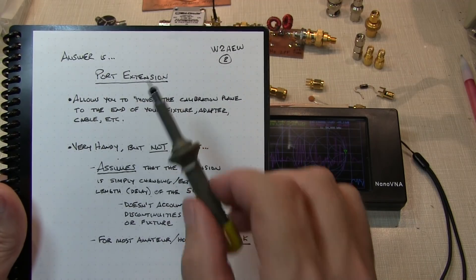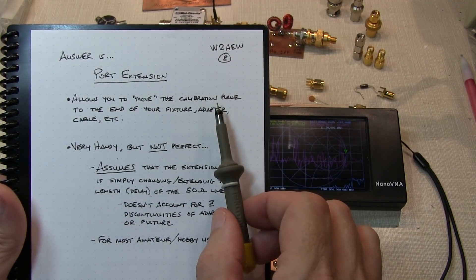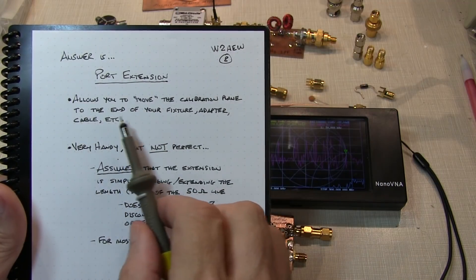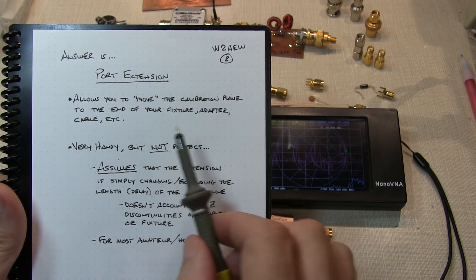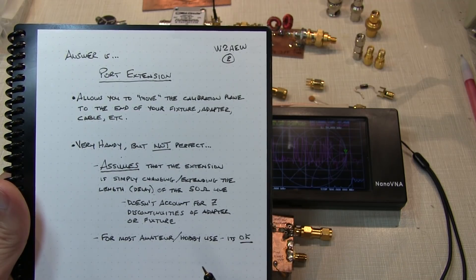Well, the answer is to use a port extension. This allows you to move the calibration plane, or extend it, to the end of your fixture, cable, adapter, or whatever it is that you needed to add in order to connect your DUT.